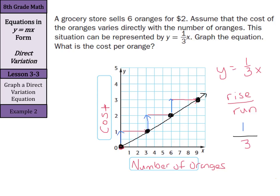What is the cost per orange? Well, two ways to go about that. We could look at our graph at one orange, and what is the cost right there? Well, it's under 50 cents, so we can kind of estimate 30, 40 cents or so. Or we can look at it and go, well, one-third as a decimal is about 0.33.